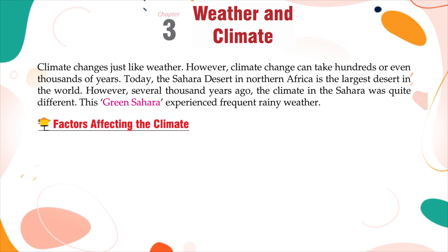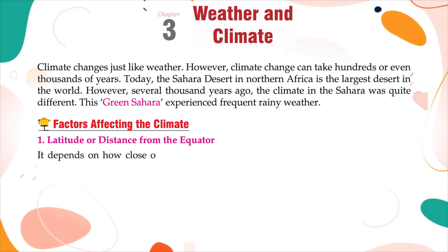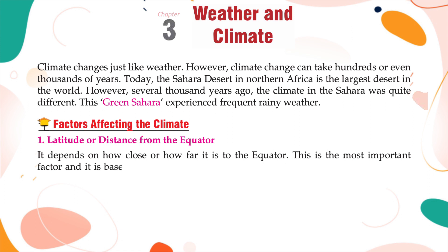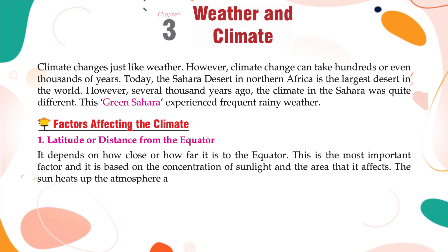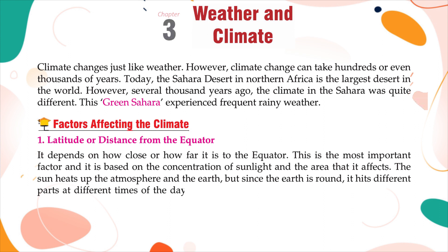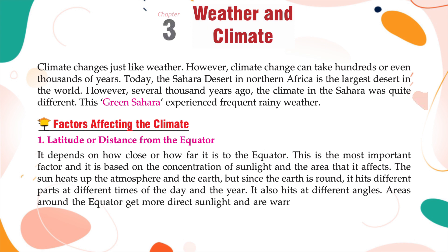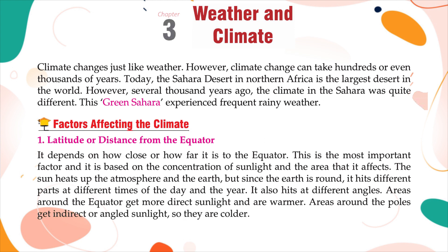Factors affecting the climate. Latitude, or distance from the equator, is the most important factor. It is based on the concentration of sunlight and the area it affects. The sun heats up the atmosphere and the earth, but since the earth is round, it hits different parts at different times of the day and the year, and also at different angles. Areas around the equator get more direct sunlight and are warmer, while areas around the poles get indirect or angled sunlight, so they are colder.